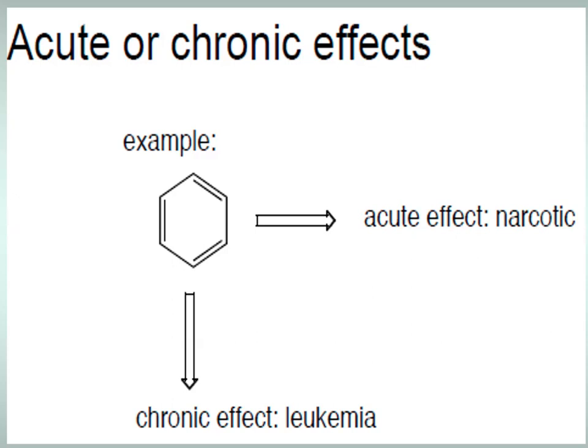Acute poisoning occurs when a high dose of toxic substance is ingested at one time. This is accompanied by rapidly occurring symptoms resulting within minutes to days — for example, cyanic acid and its salts within hours to days. Most of the time, acute poisoning occurs by accident. However, in some cases, acute poisoning may be intentional — to misappropriate property, to kill, or to make the victim helpless. Such poisoning is called criminal poisoning. If a poison is used to commit suicide, it is called suicidal poisoning.